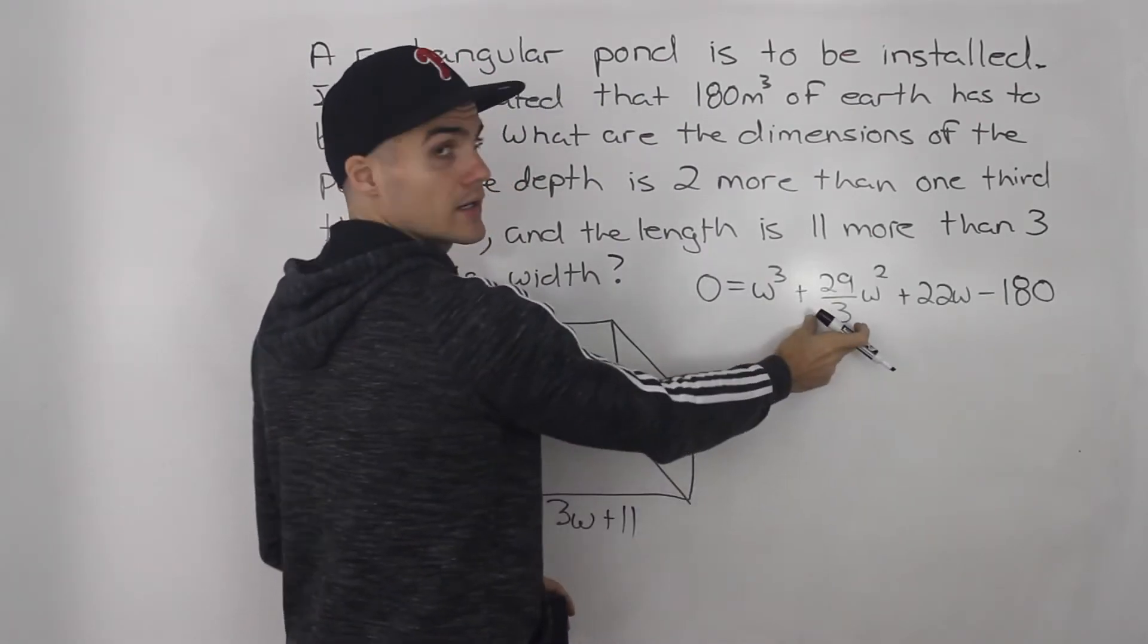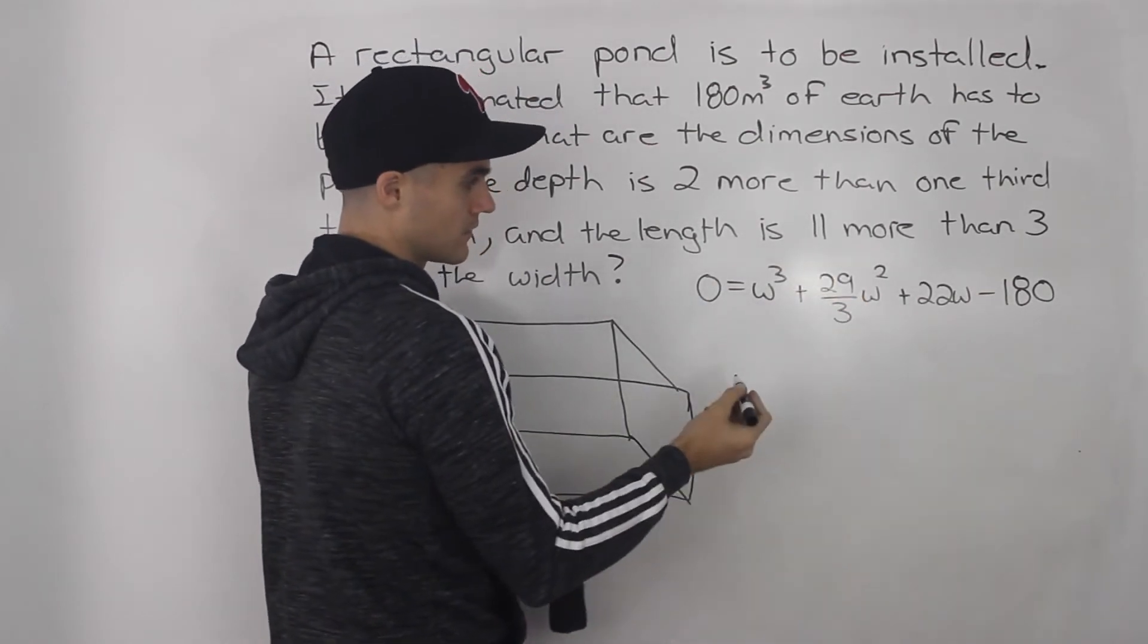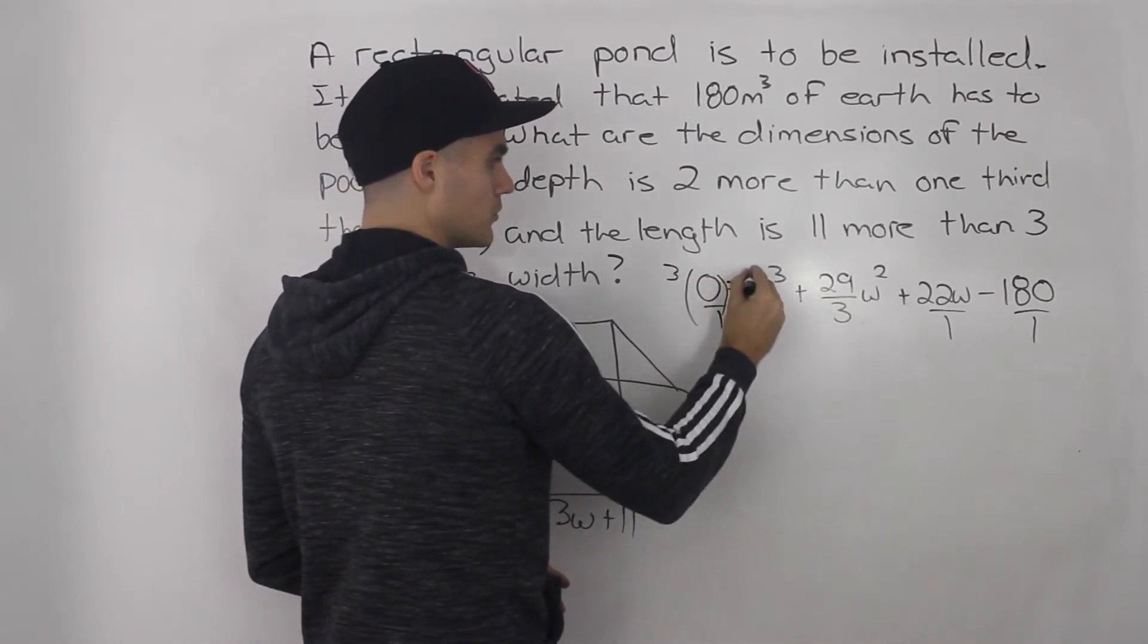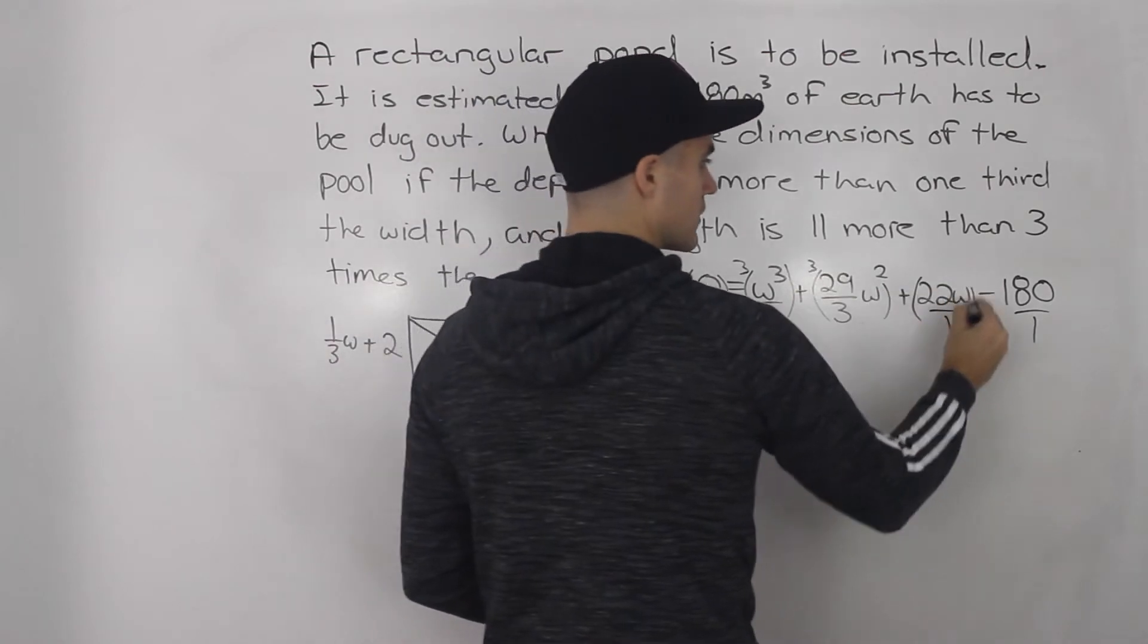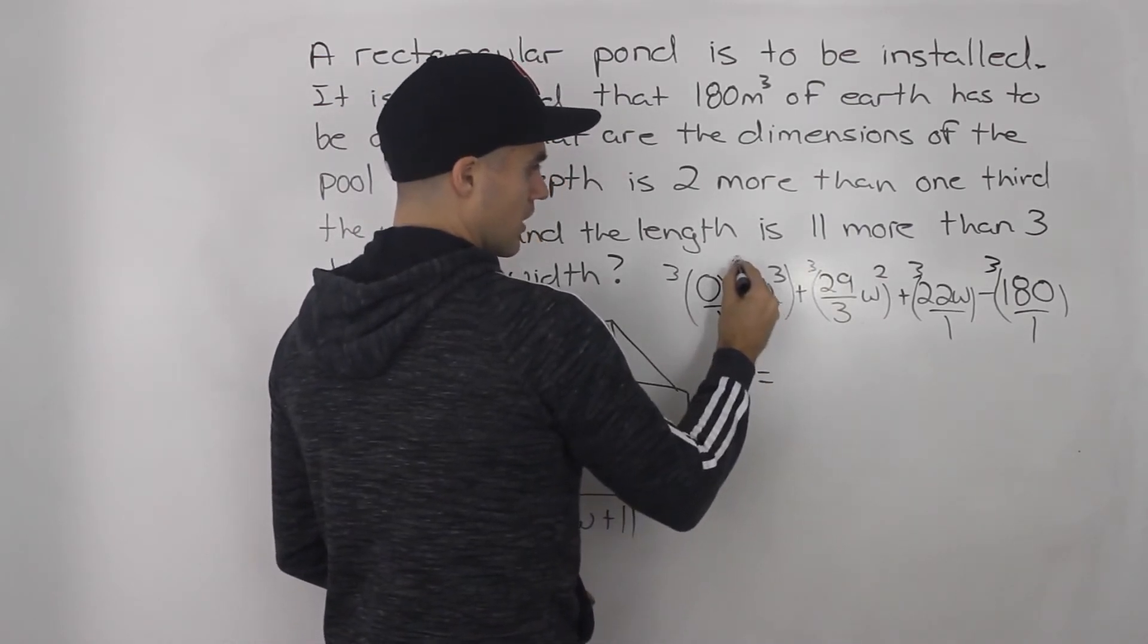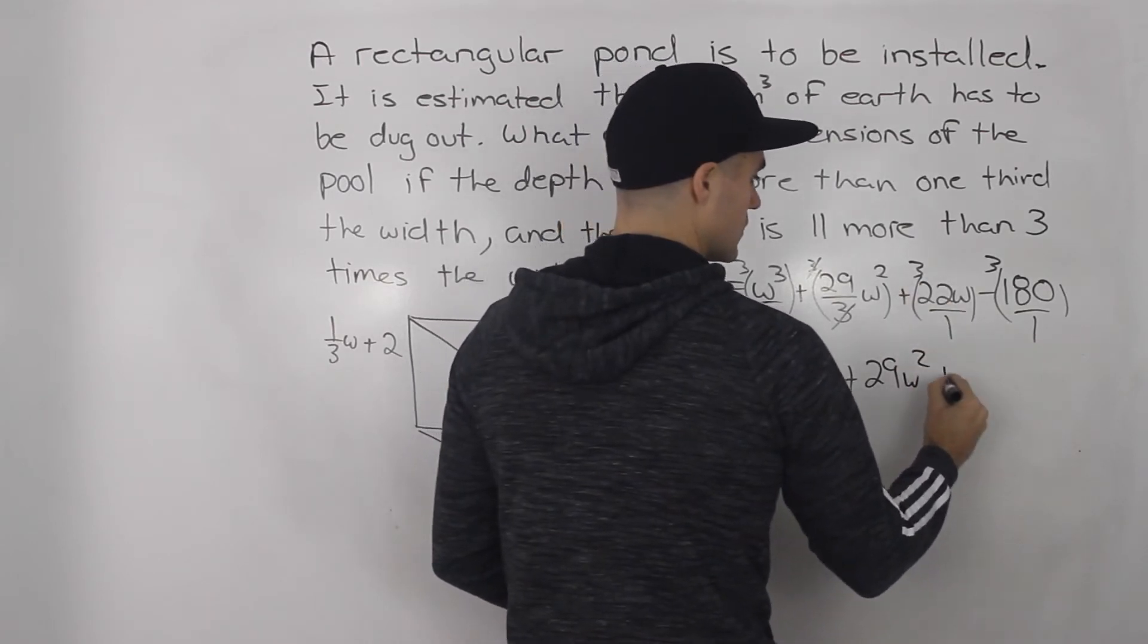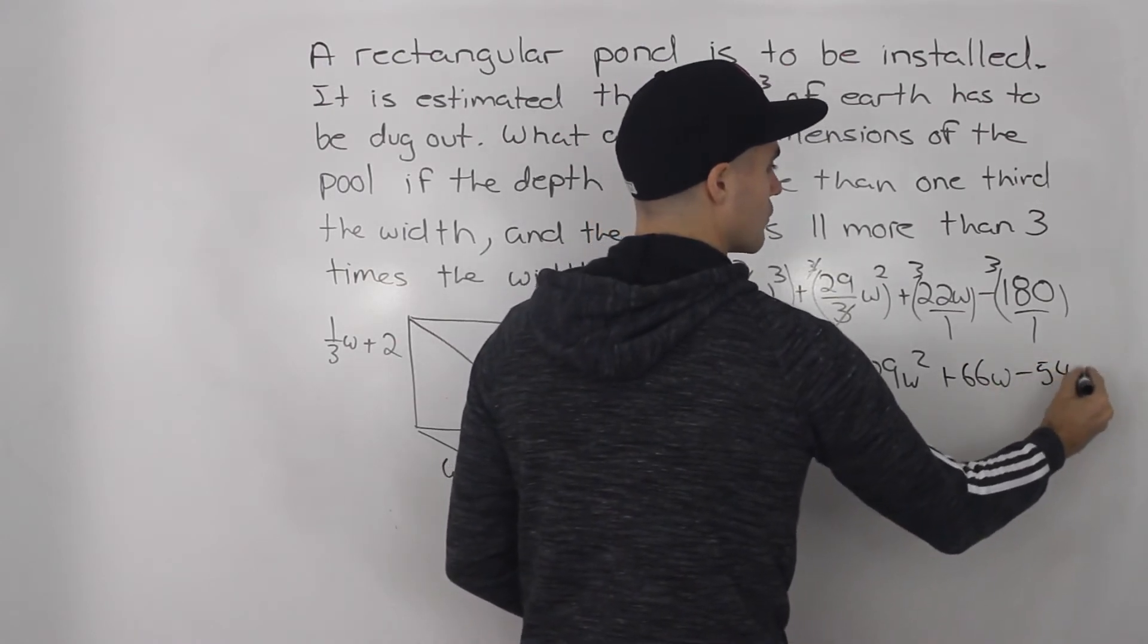And then at this point, my suggestion is to get rid of the denominator. So what you want to do is you want to multiply everything in the equation by the lowest common denominator. And notice that everything else is over one. So lowest common denominator is three. So we would multiply everything in the polynomial equation left side and right side by three to get rid of that denominator. So what do we end up having? Three times zero is still zero. Three times w cubed, that's three w cubed. And then the threes here cancel out. So we're just left with 29 w squared. Three times 22 w, that gives us 66 w. And then three times 180 or negative 180 is negative 540.